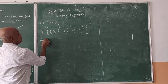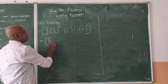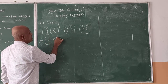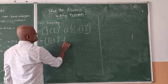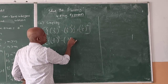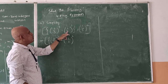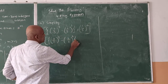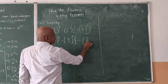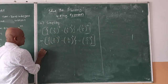Opening the small brackets first. Using the rule 1 by a to the power of minus n equals a to the power of n: 1 by 3 to the power of minus 3 becomes 3 to the power of 3, and 1 by 2 to the power of minus 3 becomes 2 to the power of 3. When we take the reciprocal, the negative sign becomes positive.